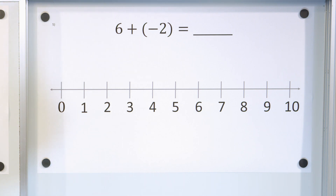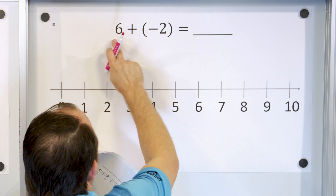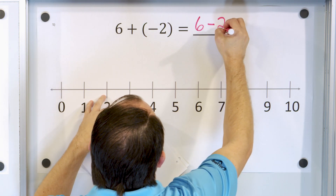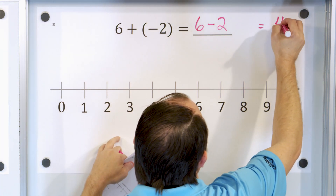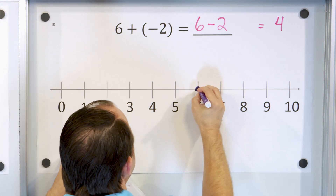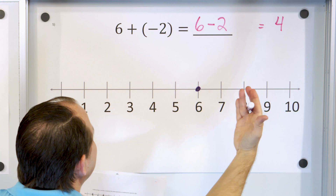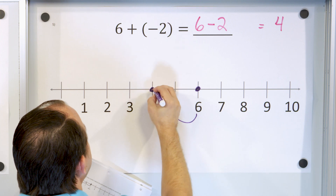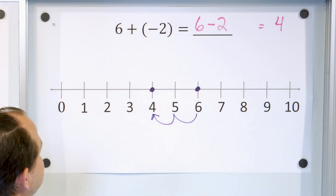Problem number five: six plus negative two. How do we rewrite this in terms of subtraction? Adding the opposite sign is the same thing as subtraction. So six plus negative two is the same thing as six minus two, which equals four. On the number line: I start with six dollars, and usually when you add you go to the right, but since I'm adding debt I slide to the left to land on four. That's the same as six minus two, also landing on four.